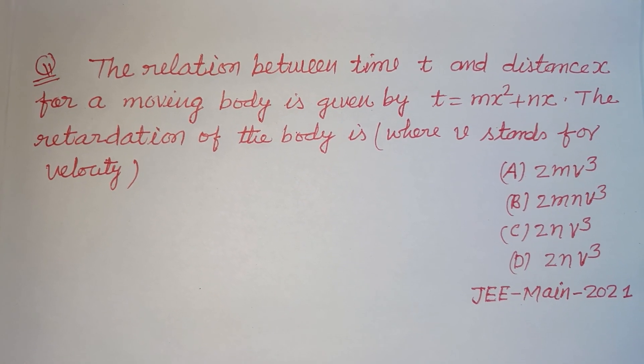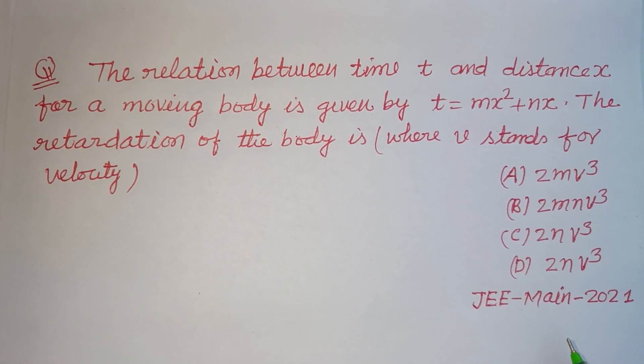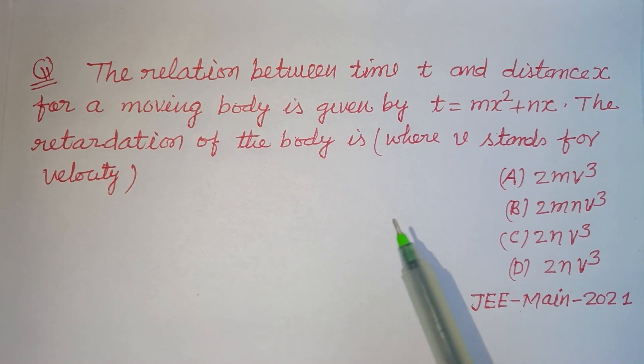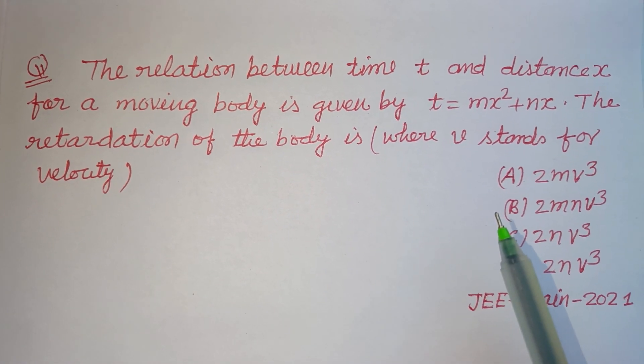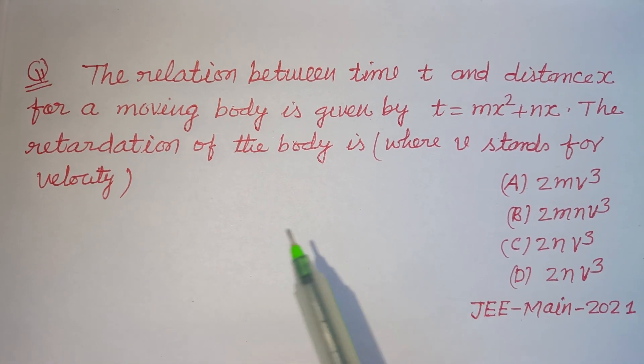Hello viewers, warm welcome to this YouTube channel. This is a question from JEE Main 2021. The relation between time and distance x for a moving body is given by t equals mx squared plus nx. The retardation of the body is asked, where v stands for velocity.